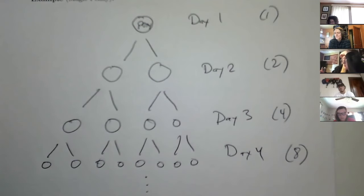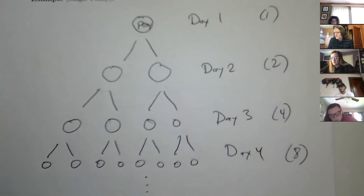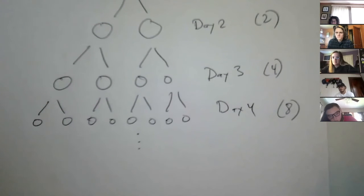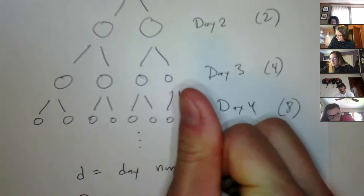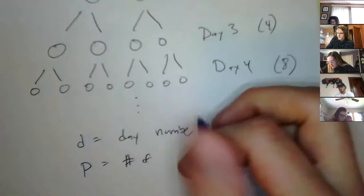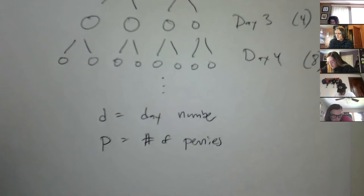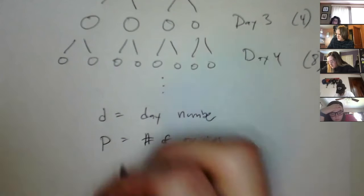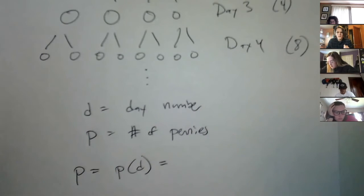Let's define our variables. We want to find a relationship between the day and the number of pennies. I want a function I can plug the day into that pops out how many pennies I get. D for day and P for penny. So D is day number and P is number of pennies. Based on the data points we have, can we guess a function that gives me the number of pennies when I plug in the day? I want P equals P of D.